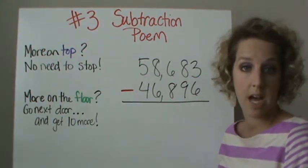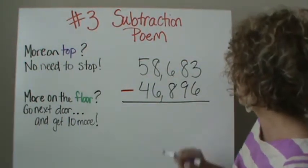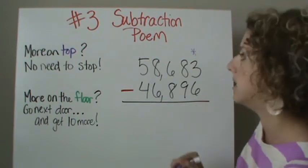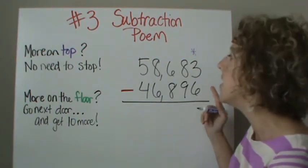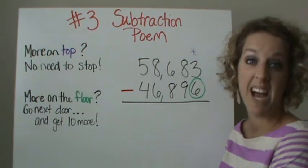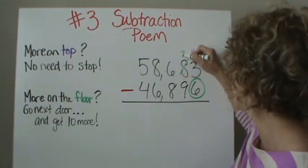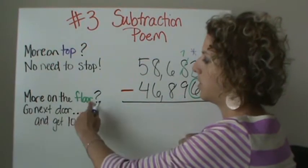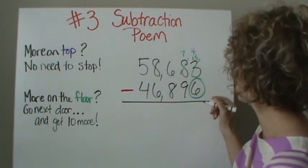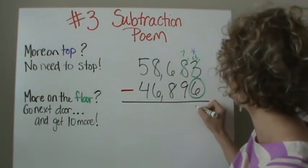You have to decide: is there more on top or more on the floor? That's your first decision. Always start in the ones place: three minus six. There is more on the floor. So I need to grab my green marker. More on the floor — go next door and get ten more. My eight tens becomes seven, and I give ten to the three because more on the floor means go next door and get ten more. So my three becomes thirteen. Thirteen minus six is seven.